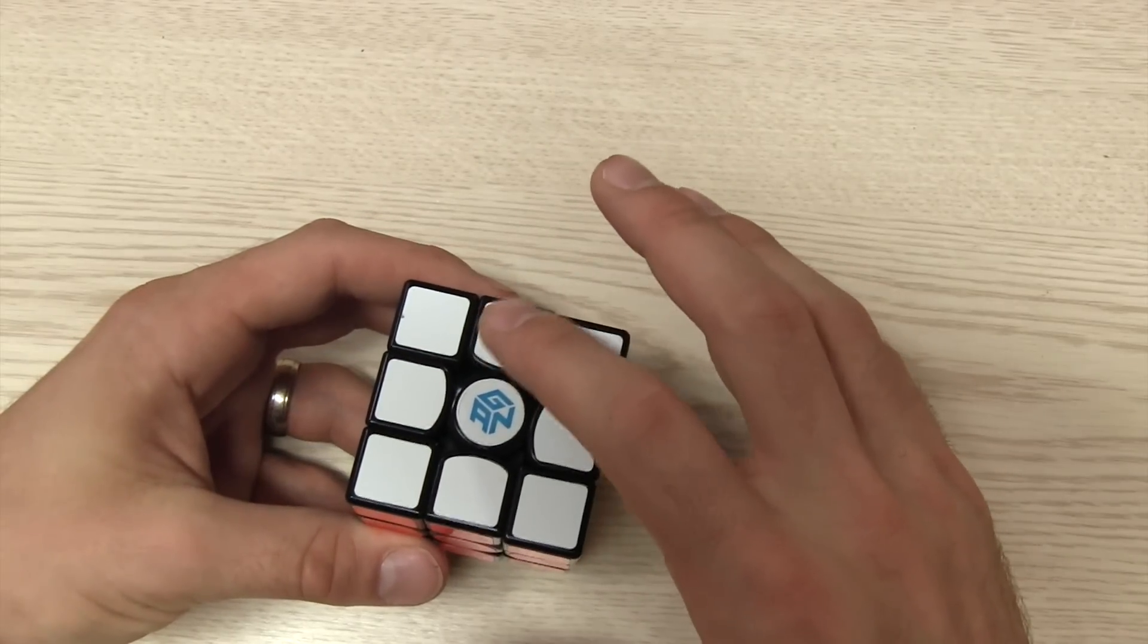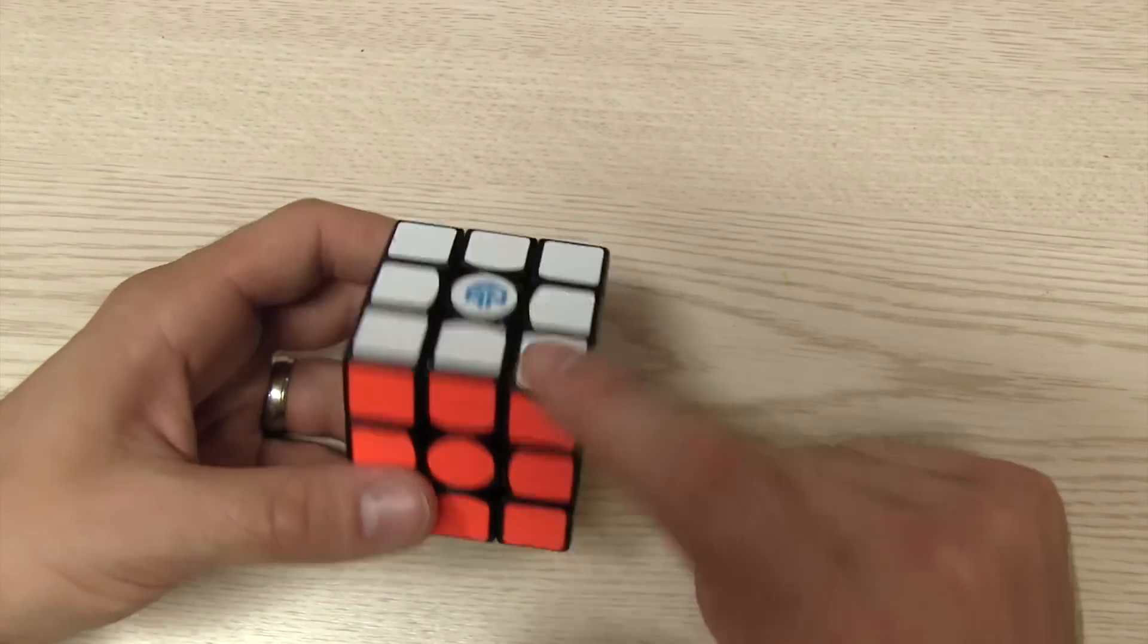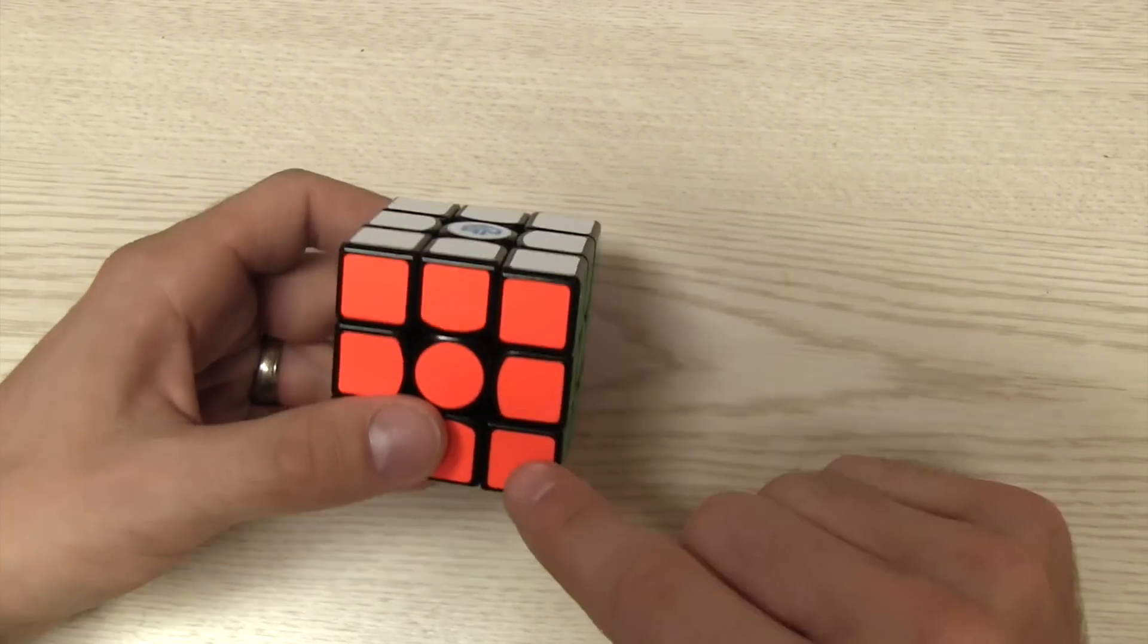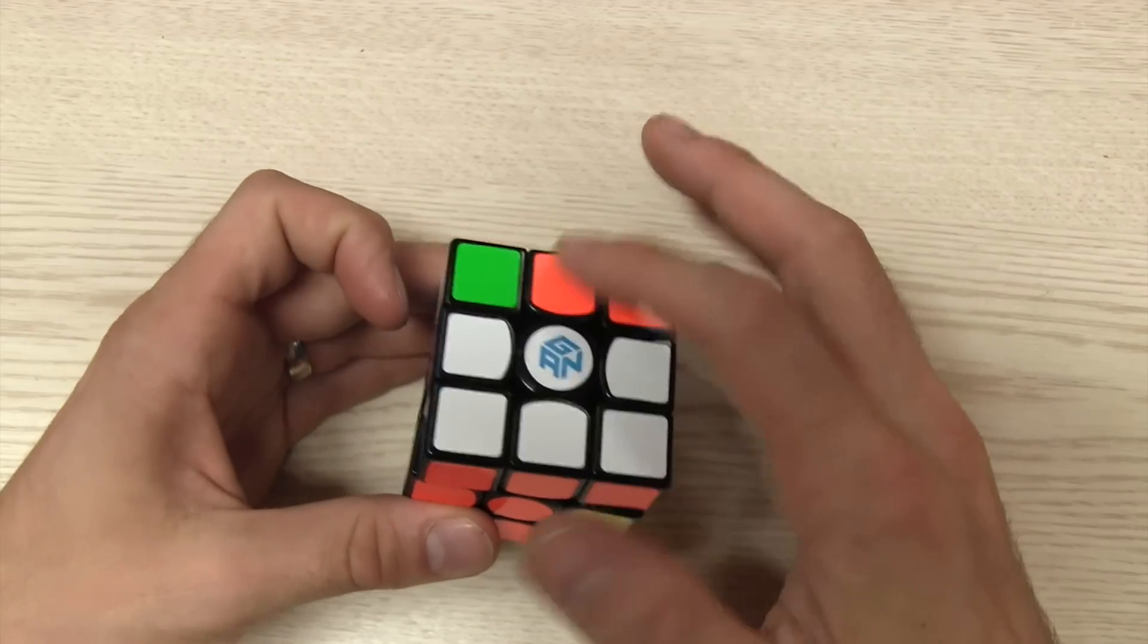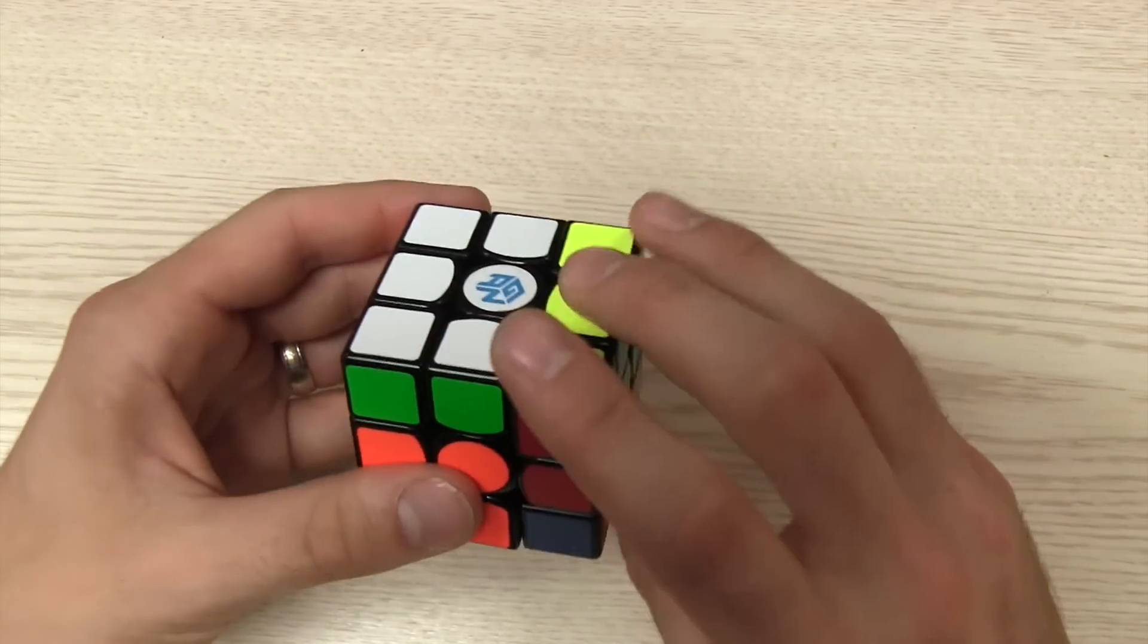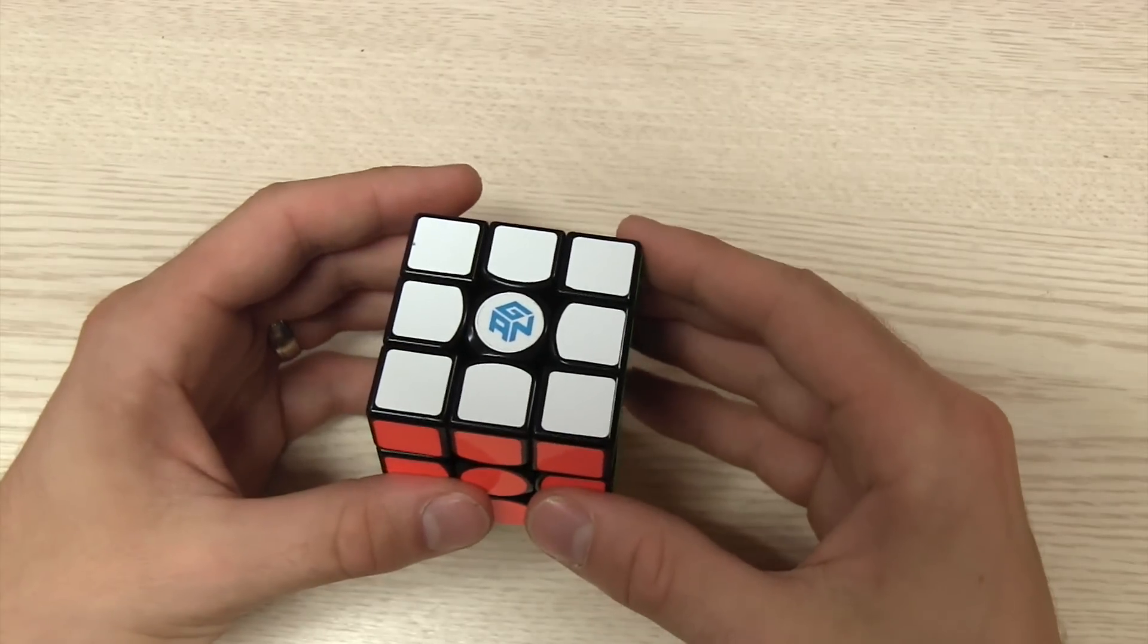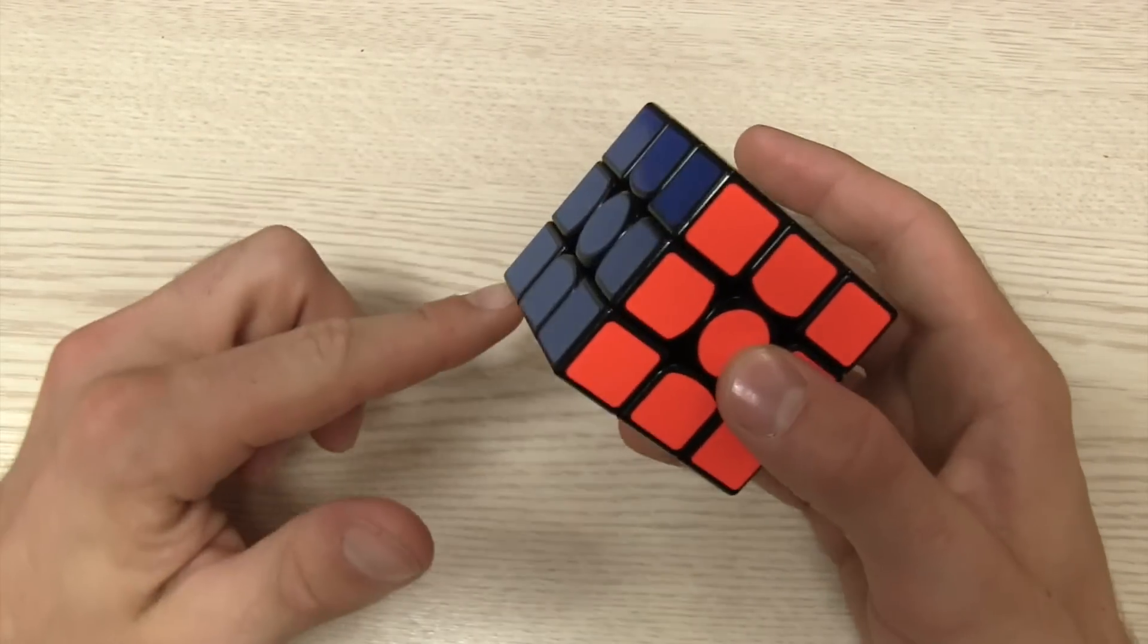So first off, to get pieces onto here, the setup moves for everything along this row and this row start with really doing U moves. So for example, if I want to get F into here, I do U U R U' and that'll put it right there. For V, it's U R2 U', for P, it's U R' U', and then same thing on this side.